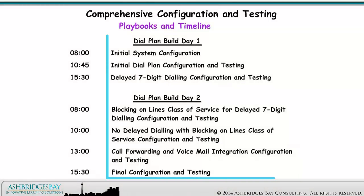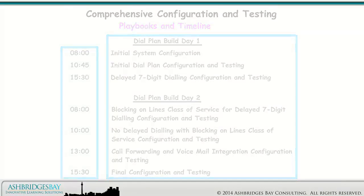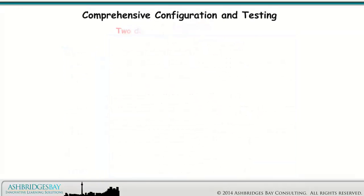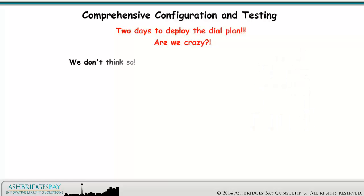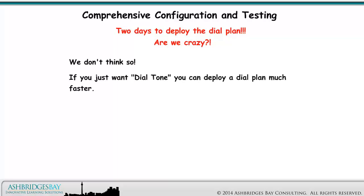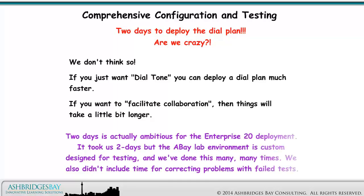Here are the playbooks and the timeline. Two days to deploy the Dial Plan — are we crazy? We don't think so. If you just want dial tone, you can deploy a Dial Plan much faster. If you want to facilitate collaboration, then things will take a bit longer. Two days is actually ambitious for the Enterprise 20 deployment. It took us two days, but we have a custom lab designed for testing, and we've done this many, many times.